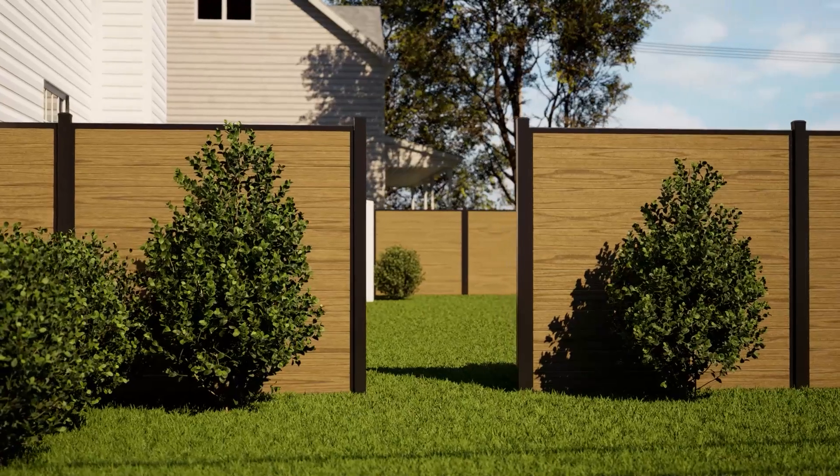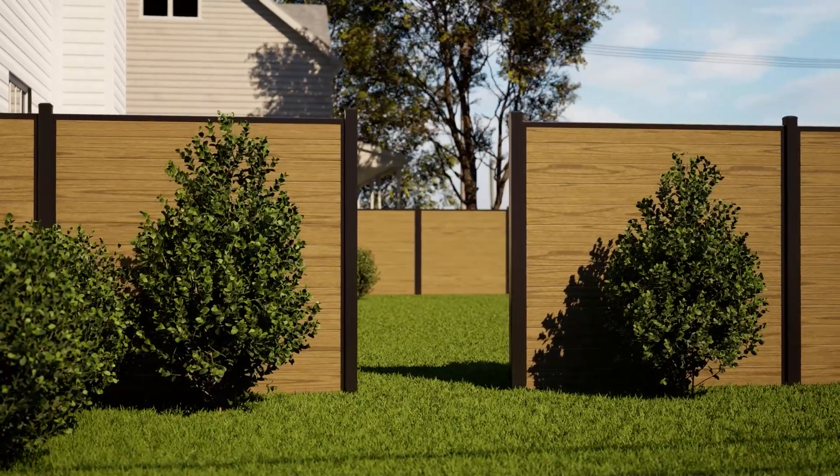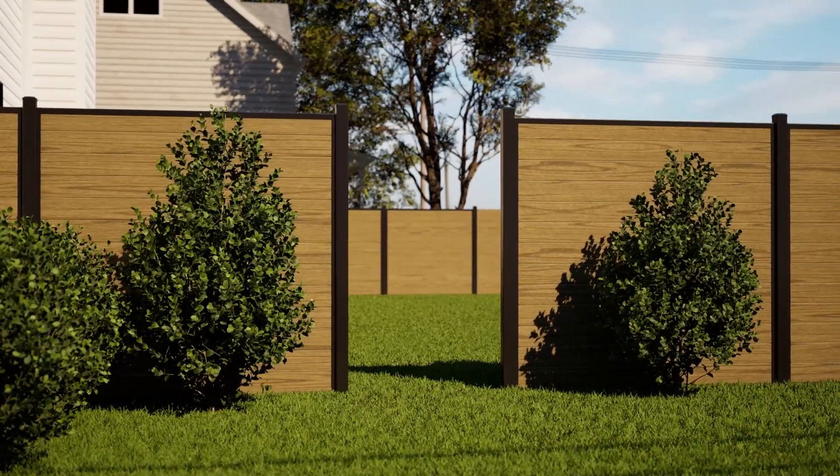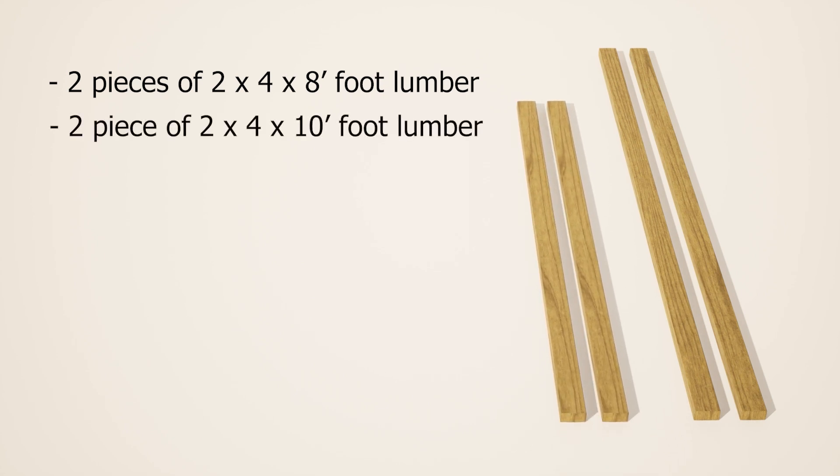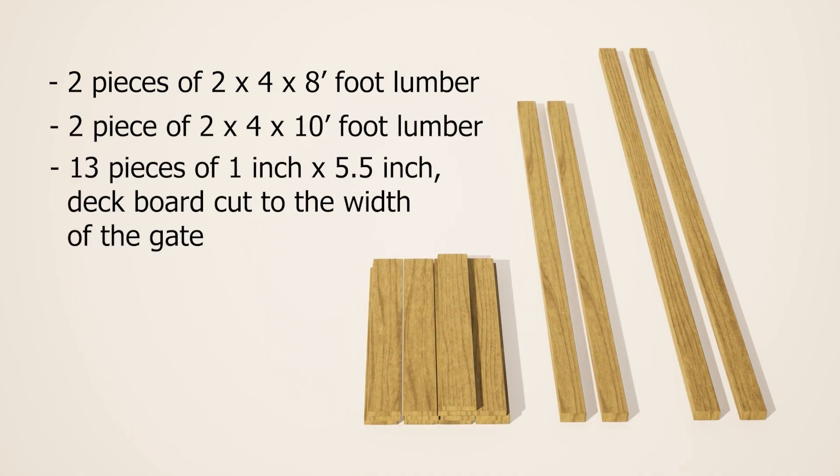The building materials needed but not included in the gate kit to build a standard 6 foot high by approximately 48 inch wide gate are: 2 pieces of 2 by 4 by 8 foot lumber, 2 pieces of 2 by 4 by 10 foot lumber, 13 pieces of 1 inch by 5 and a half inch deck boards cut to the width of the gate, and a 100 pack of 2 inch deck screws.